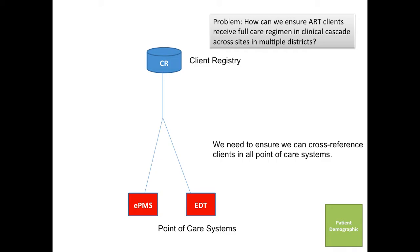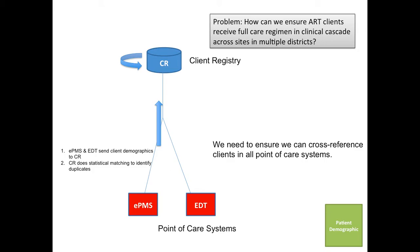One approach to doing this is to have a central client registry — a common store of patient demographic information used across multiple systems. In this case, the EPMS and EDT systems would send client demographic information to the client registry. The client registry has built-in statistical matching to help identify duplicate information, so we can resolve when a patient is duplicated in the EPMS and EDT systems.